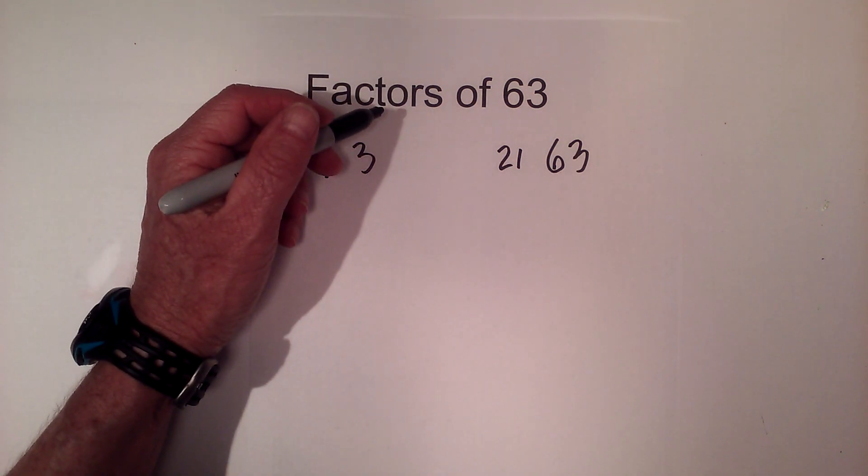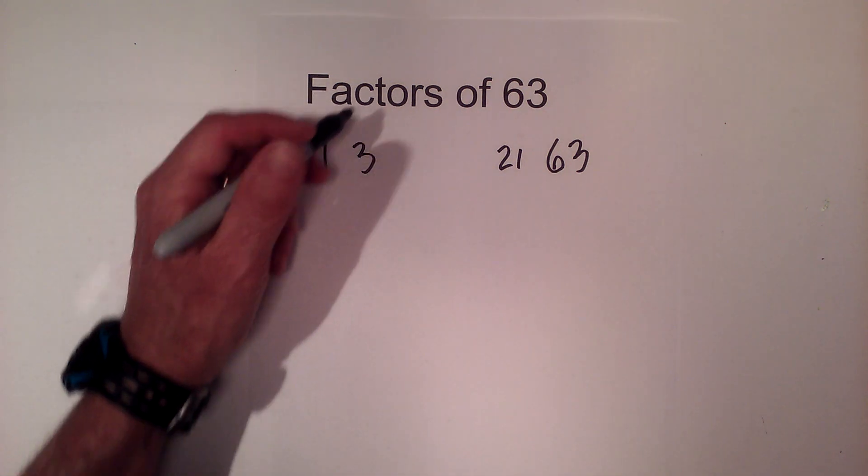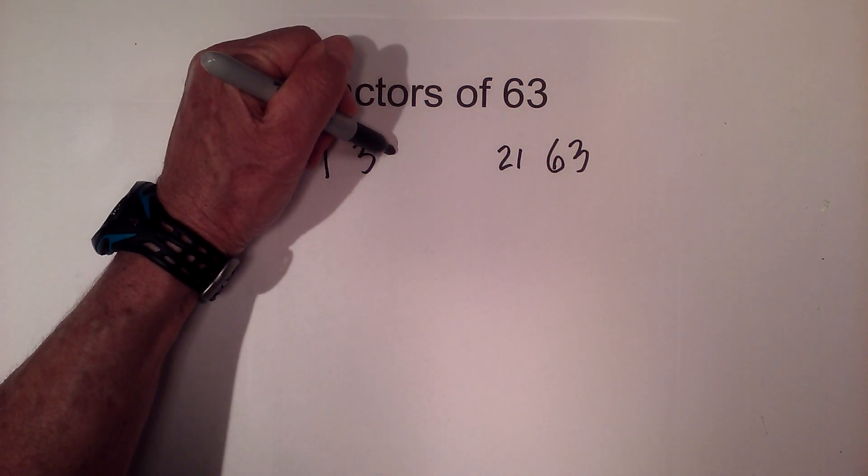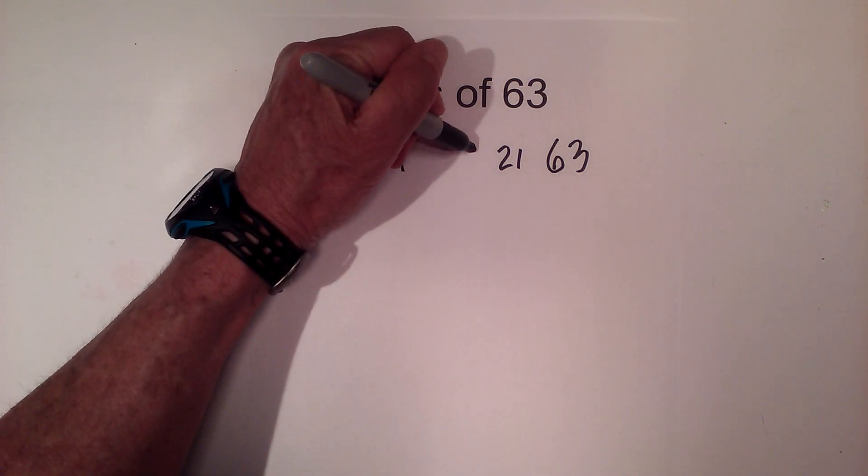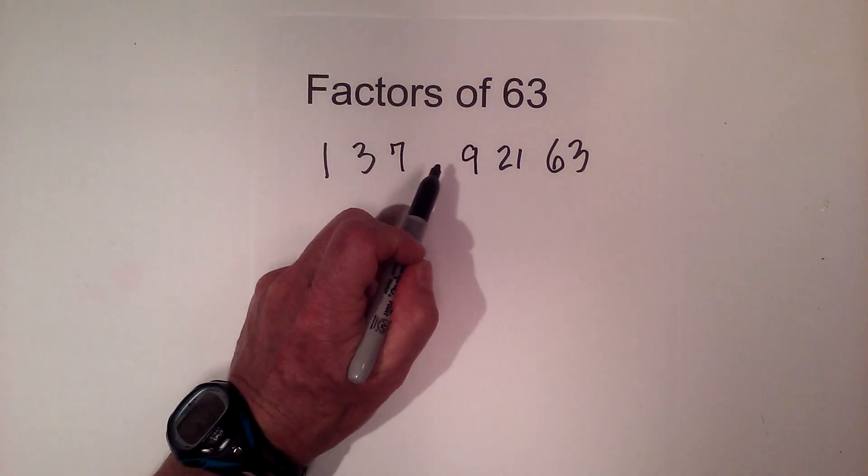6 will not go into 63, but 7 will go into 63, and 7 times 9 is 63.